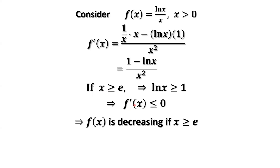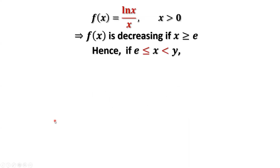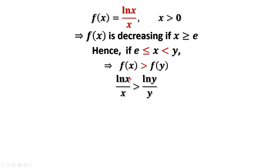If the first-order derivative of f of x is less than or equal to 0, then f of x is decreasing when x is bigger than or equal to e. If we have two numbers x and y, where x is less than y and both x and y are bigger than or equal to e, then because f is decreasing, f of x is bigger than f of y. By definition, f of x equals log of x divided by x, and f of y equals log of y divided by y.